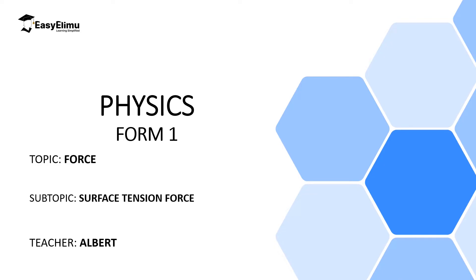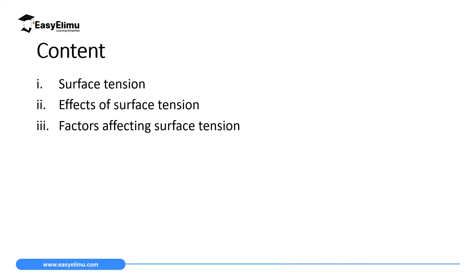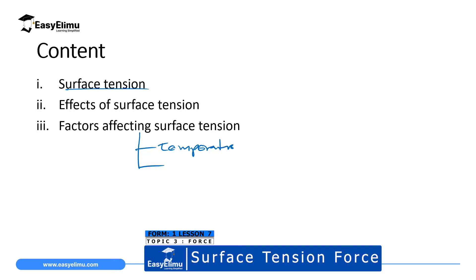My name is Albert. By the end of this lesson I expect you to be able to state and explain surface tension, state some of the effects of surface tension, and give the factors which affect surface tension — specifically how temperature affects surface tension and how impurities affect surface tension.